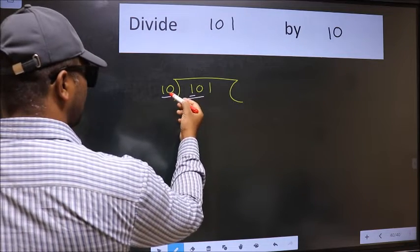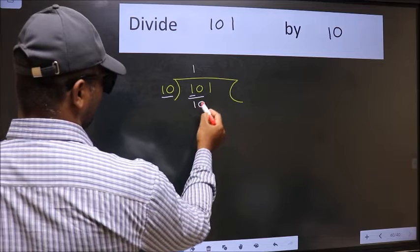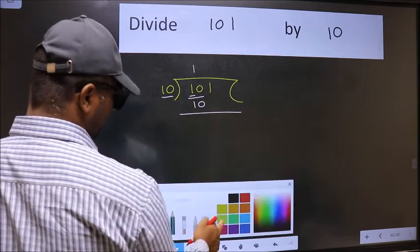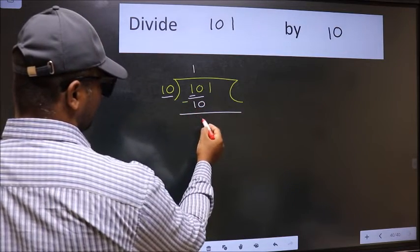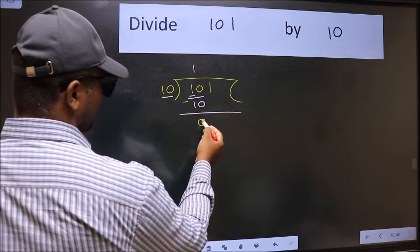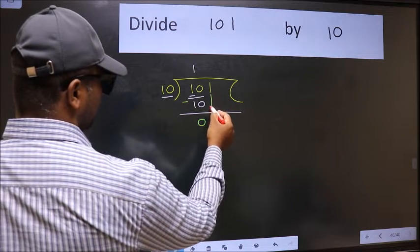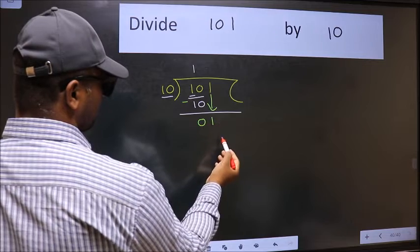When do we get 10 in 10 table? 10 once 10. Now we should subtract. We get 0. After this, bring down the beside number. So 1 down.